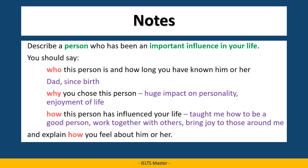I'm going to show you the notes that I made in one minute. I timed myself to make sure I only took one minute — I wanted to be realistic. So I wrote down: dad, since birth — for who this person is and how long you've known them. Then for why you chose this person, I wrote: huge impact on personality, enjoyment of life. I wrote 'huge impact' as a helpful vocabulary change instead of 'important influence' to show off a little vocabulary knowledge.